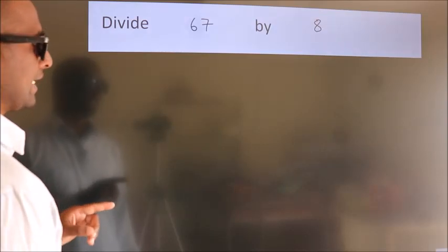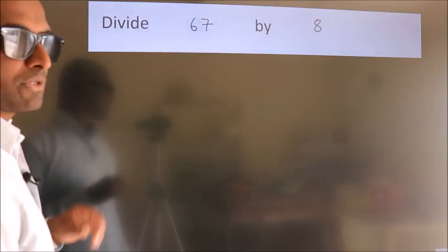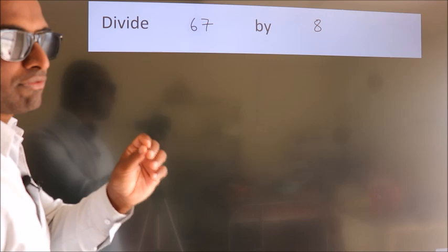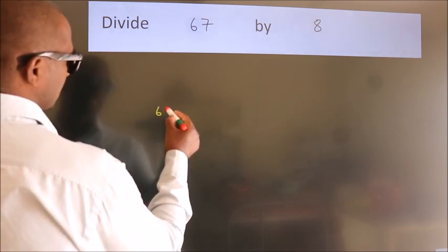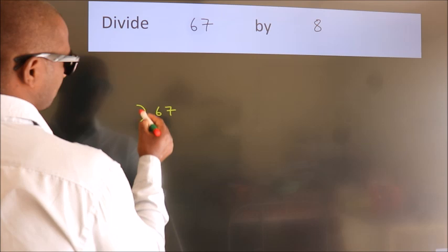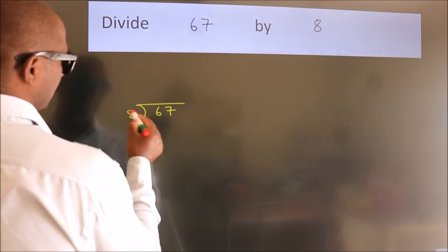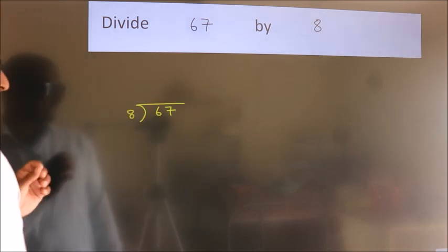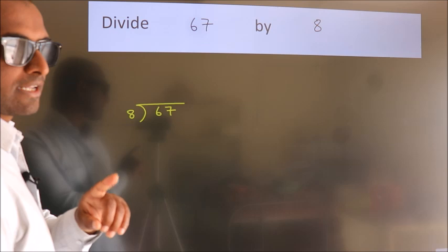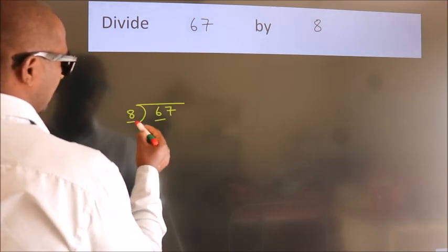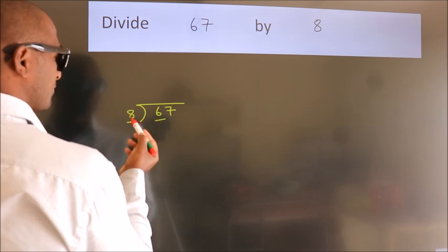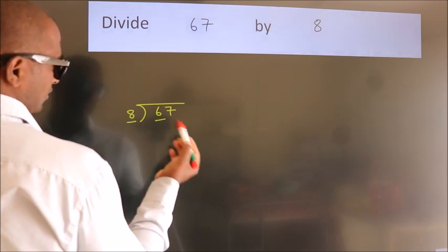To divide 67 by 8, we frame it this way: 67 here, 8 here. This is step 1. Next, we have 6 here, 8 here. 6 is smaller than 8, so we